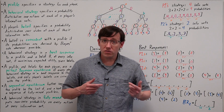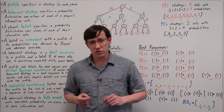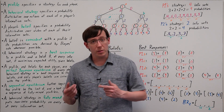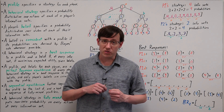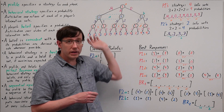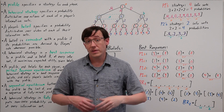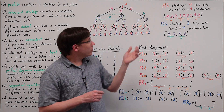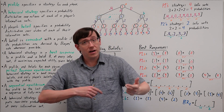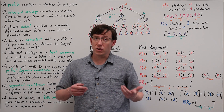Last time we saw that in extensive form games, subgame perfect equilibrium makes much better predictions than Nash. But unfortunately, subgame perfection only applies in perfect information games, because if a game has any actual information sets, we can't just backwards induce the optimal actions. Instead, we need to think about players' beliefs at each information set, and how they relate to optimal strategies, which will ultimately lead us to the notion of sequential equilibrium.